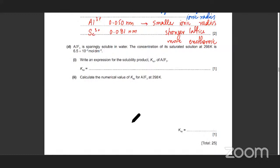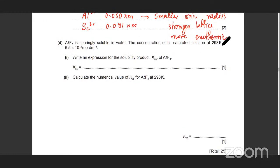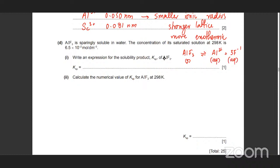The next one — it's given that AlF₃ is sparingly soluble in water. The concentration of the saturated solution at 298 K is given as 6.5 × 10⁻² mol/dm³. You're being asked to write the expression for the solubility product Ksp of AlF₃. So what's the solubility product? It's when you have a saturated solution in equilibrium with its aqueous ions. So the solid substance is in equilibrium with Al³⁺ and 3F⁻. So the Ksp expression is going to be [Al³⁺][F⁻]³, because there are three F⁻ in the equation.